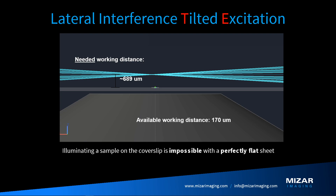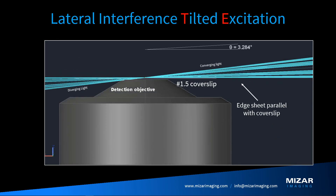We needed this to work with any objective, which means we need the focus point of the sheet very close to the surface of the cover slip, because high NA objectives have a very short working distance. However, if we kept the entire optical path perfectly flat to ensure none of the sheets pass through the cover slip, the focus point would end up almost 700 microns away from the cover slip — far too far for high NA objectives. So we tilted the entire optical assembly so that the edge sheet comes in parallel with the surface of the cover slip, allowing all four sheets to come in without passing through the slide, while keeping the focus point right at the cover slip surface.